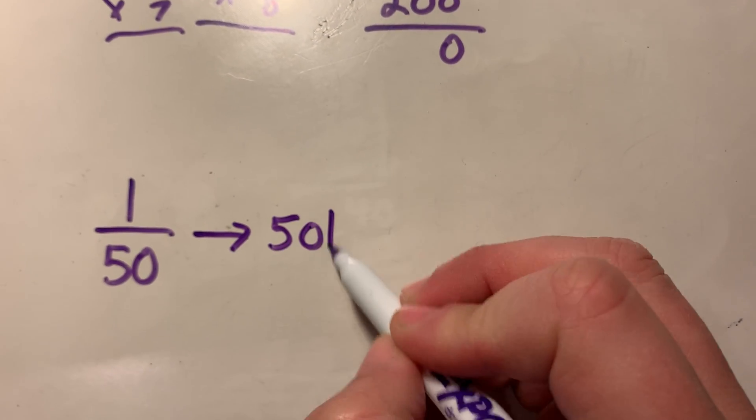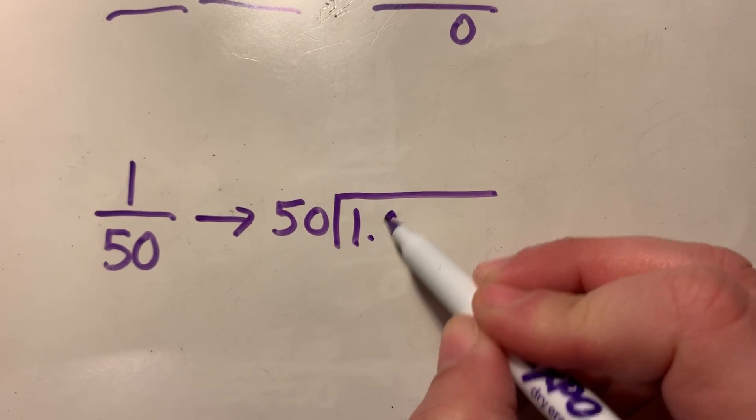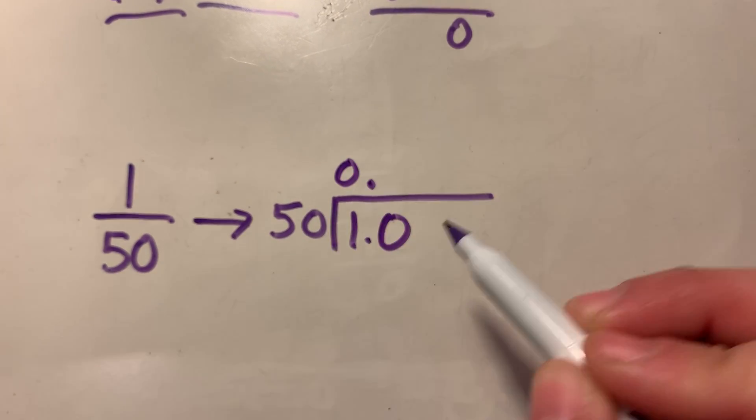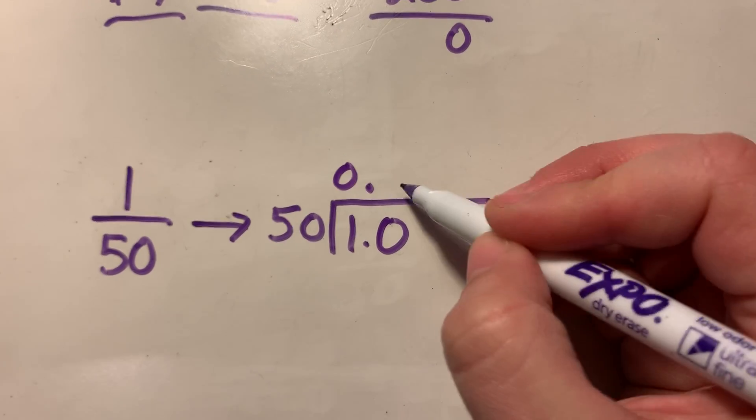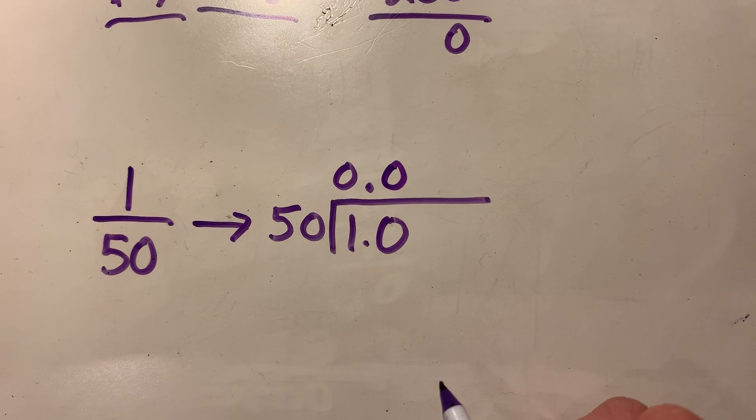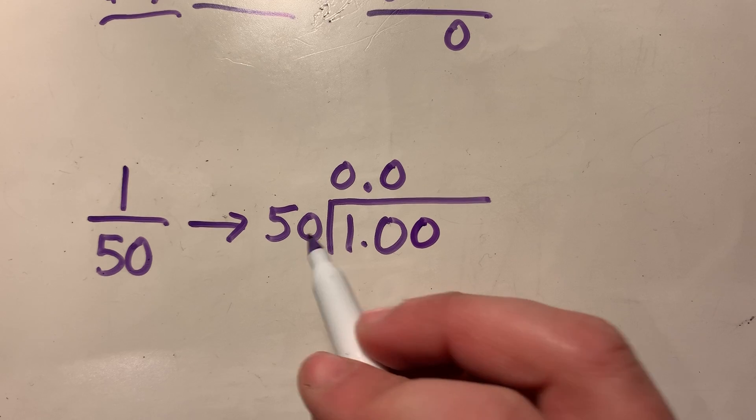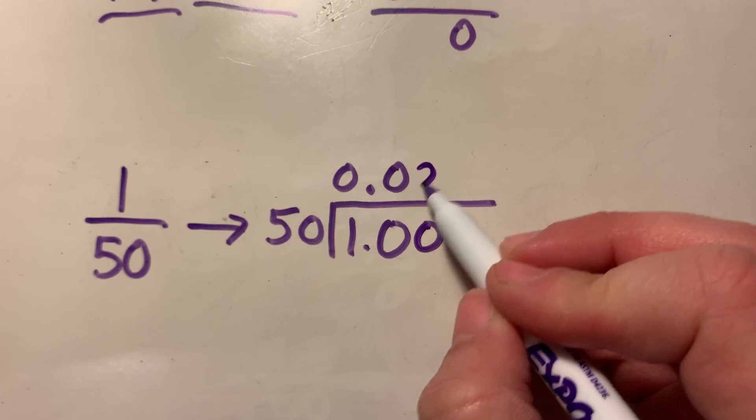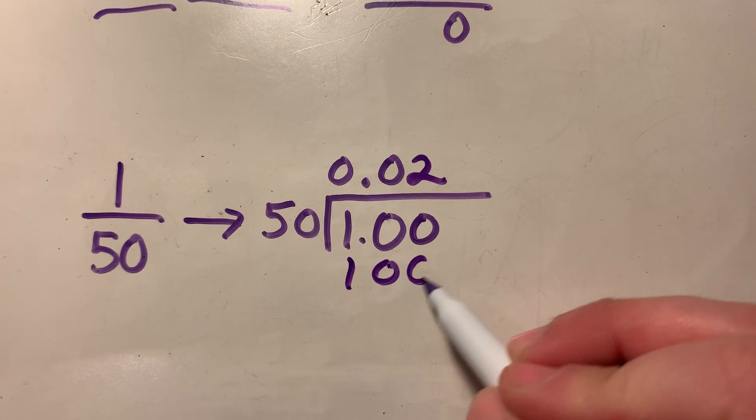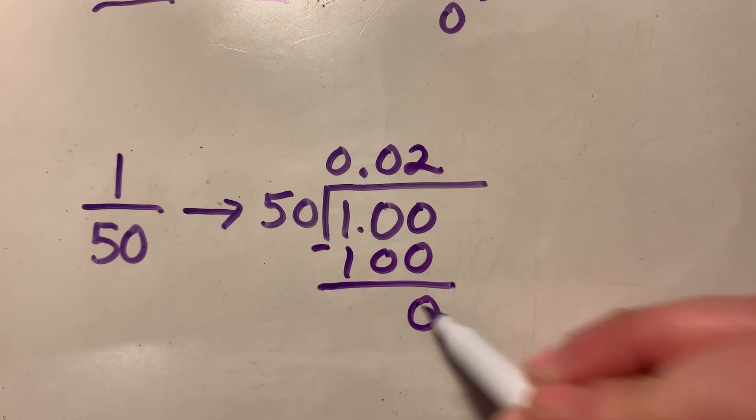So how many times does 50 go into one? It sure doesn't. So I put a decimal. Well, check it out. 50 doesn't even go into 10. So I need to put a zero and I'm going to add a zero here. 50 can go into a hundred twice. There we go.